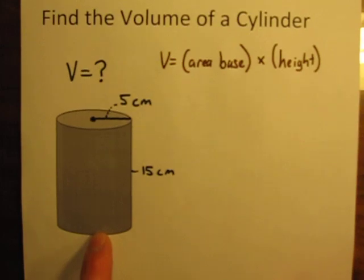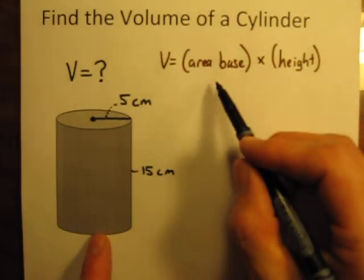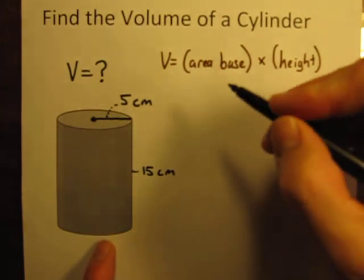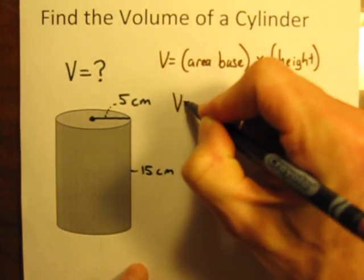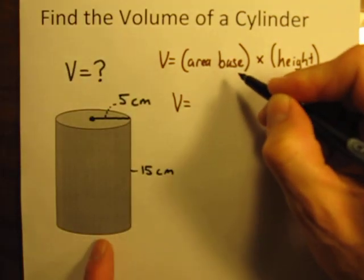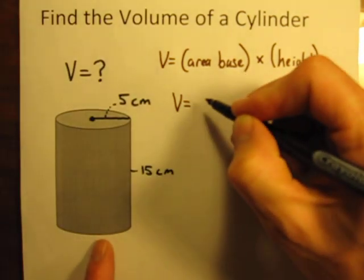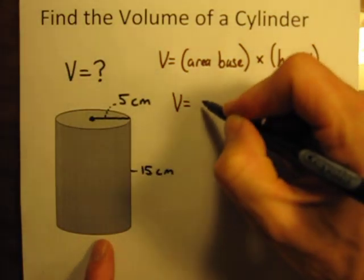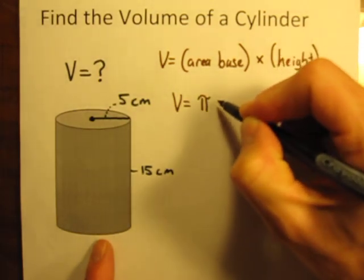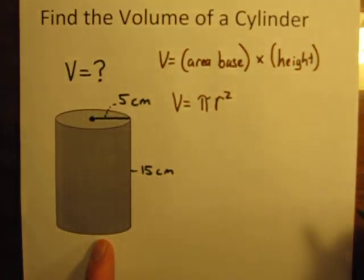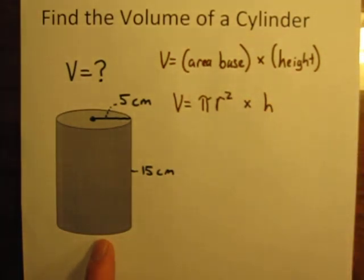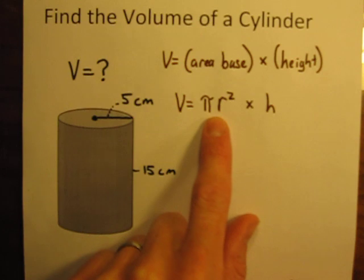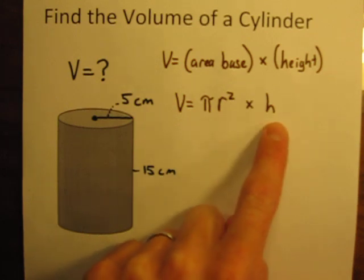So we're going to have to use the formula for the area of a circle and then multiply it by the height. So the altered version of this formula is going to be volume is equal to pi times the radius squared times the height of the cylinder. So here's the area of the base, pi r squared, because it's a circle, and then the height of the cylinder.